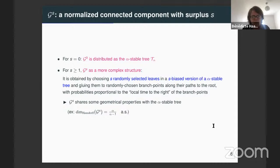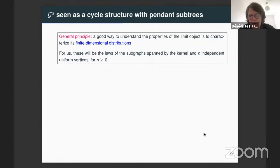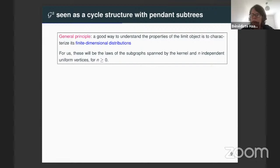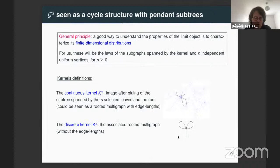To understand better the structure of this graph G_S, we'll use a classical way to describe a random object: we will describe its finite dimensional distributions. Here we have a graph with a cycle structure, which we call the kernel. We have a graph with a cycle structure on which are glued random trees. Our first goal will be to describe the distribution of this cycle structure, the kernel.